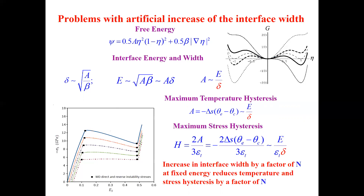If we increase the width of the interface while keeping energy, this parameter characterizing the double-well potential is in inverse proportion to interface width. Both temperature hysteresis and stress hysteresis are also in inverse proportion to interface width. So if you increase interface width by three orders of magnitude — just one micrometer — we lose all hysteresis. Without hysteresis, we cannot study nucleation, and we get homogeneous transformation instead.